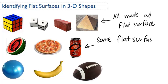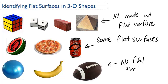Then you have objects in real life which don't have any flat surfaces at all. For example, this ball, this bouncy ball, this banana, this football — there are no flat surfaces on these. Moving on to the skills now.